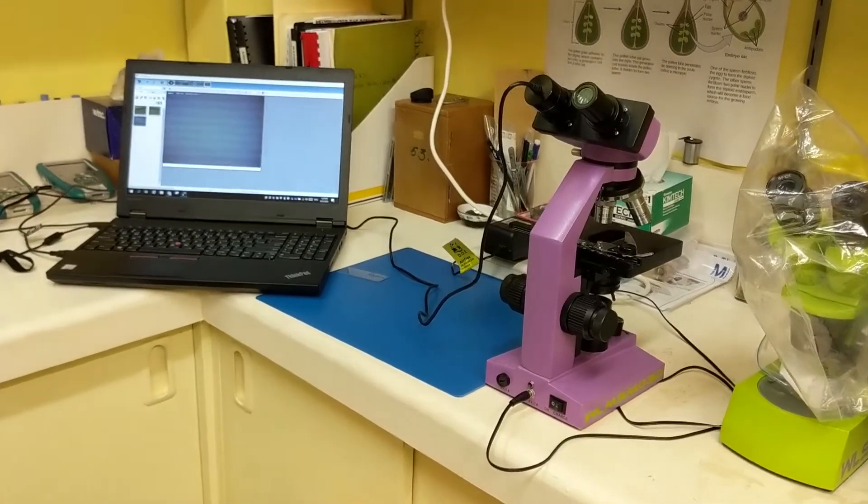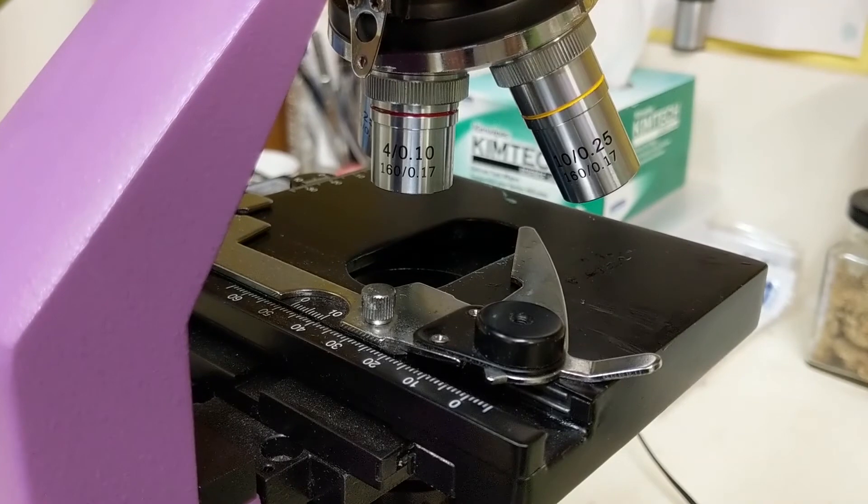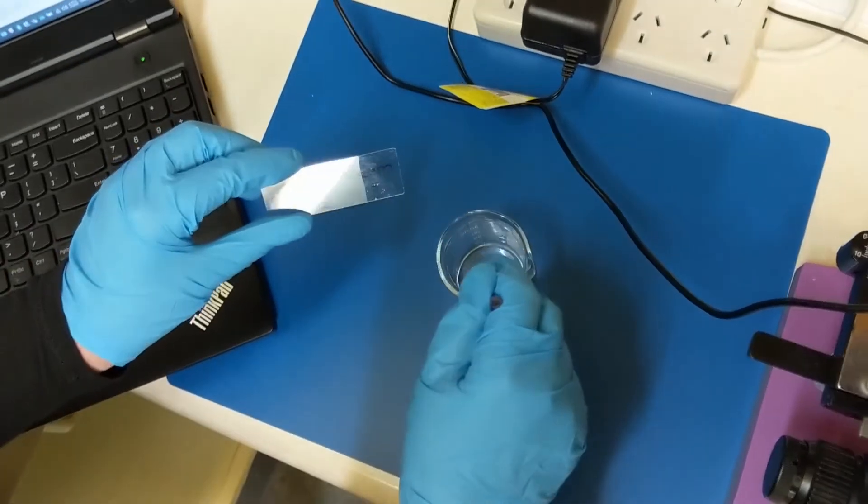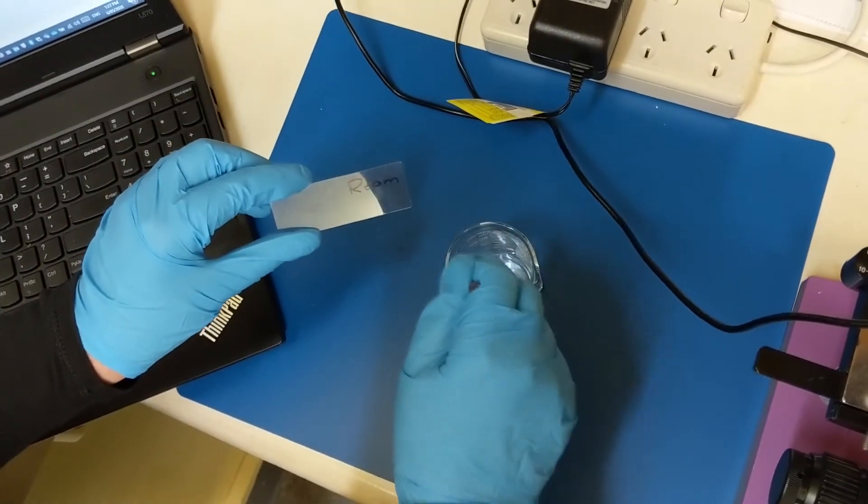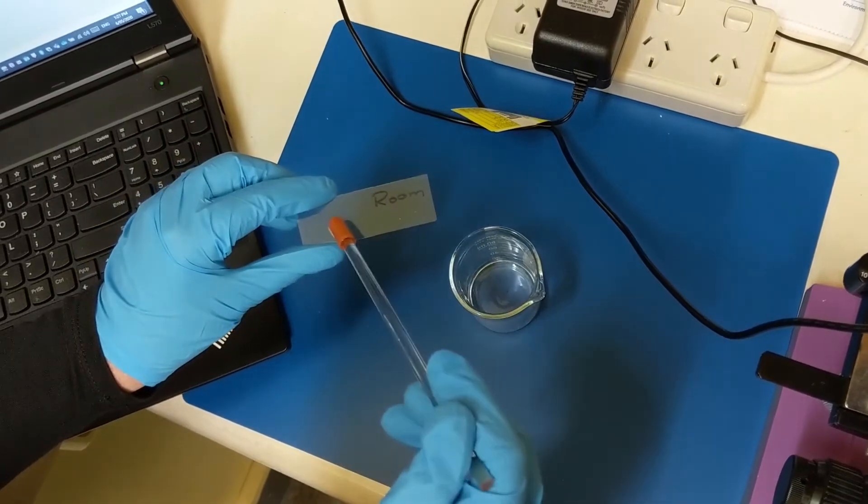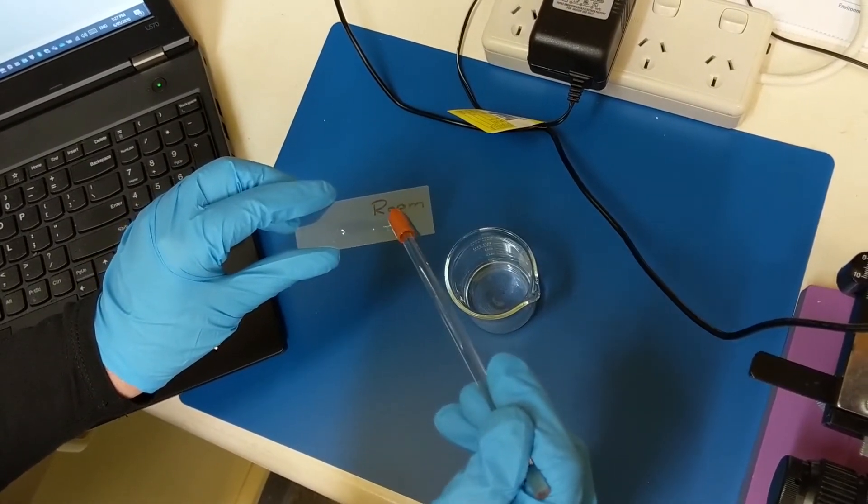We then set up the microscope so that it's ready to use with 40 times magnification, and we used a glass rod to add a streak of the magnesium sulfate solution to the slide marked room temperature. Then we observed the slide under the microscope and this is what we saw.